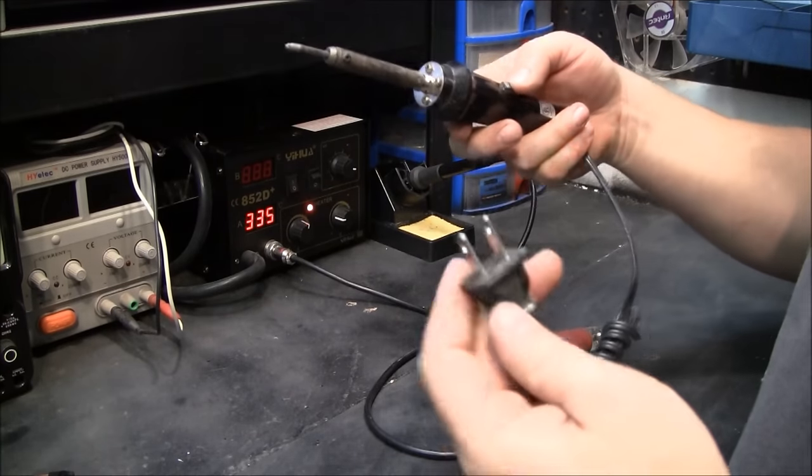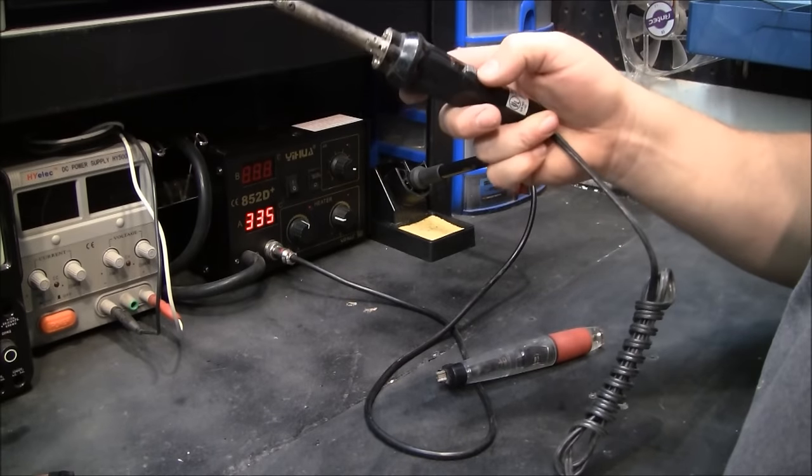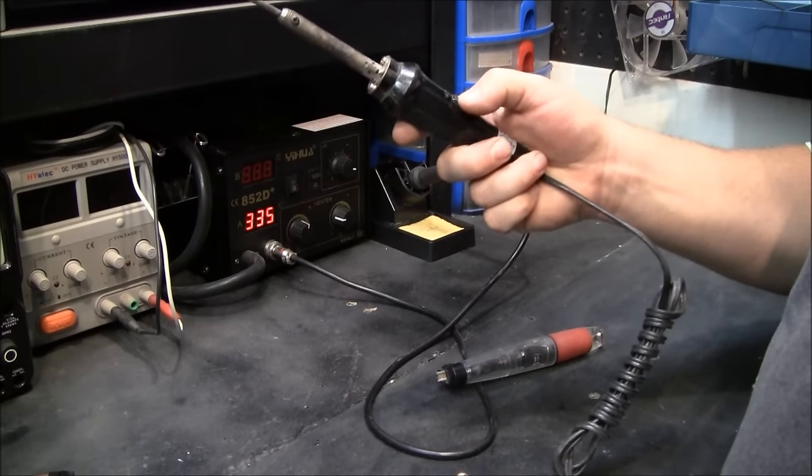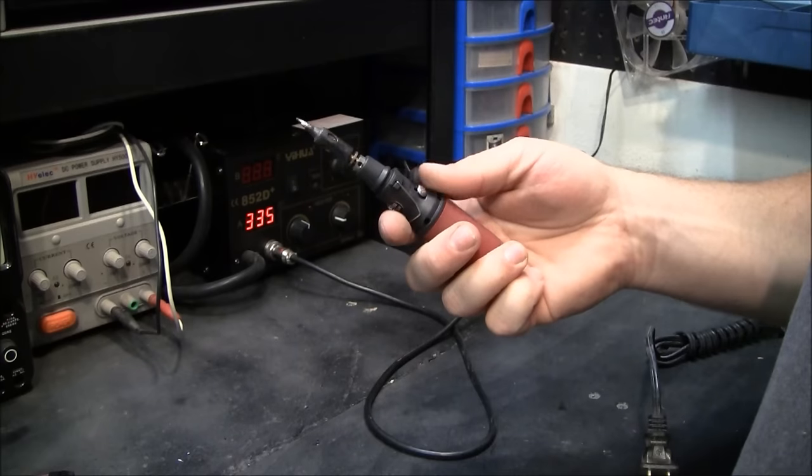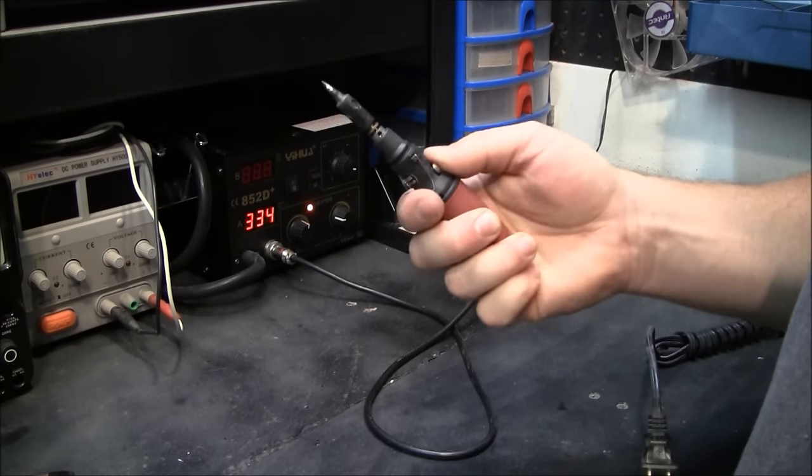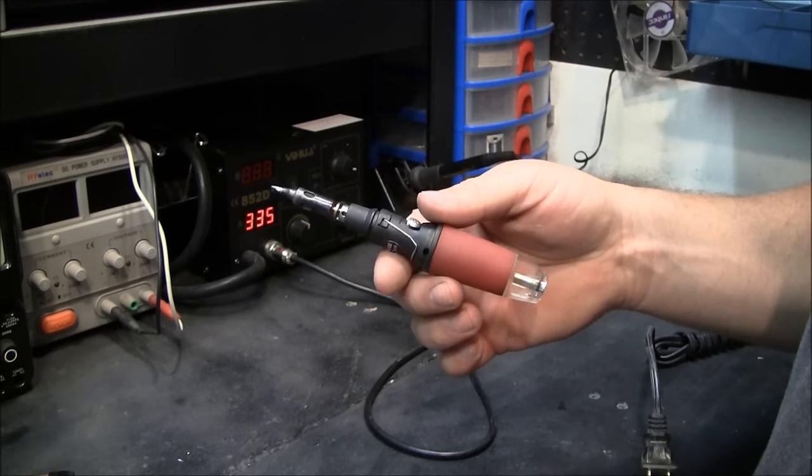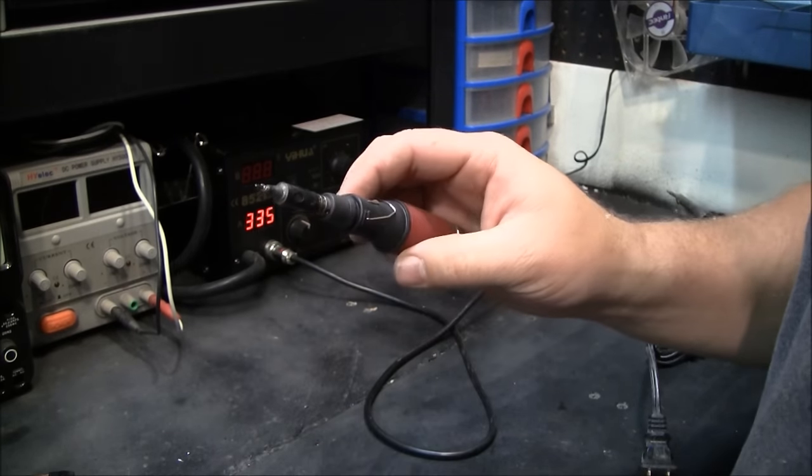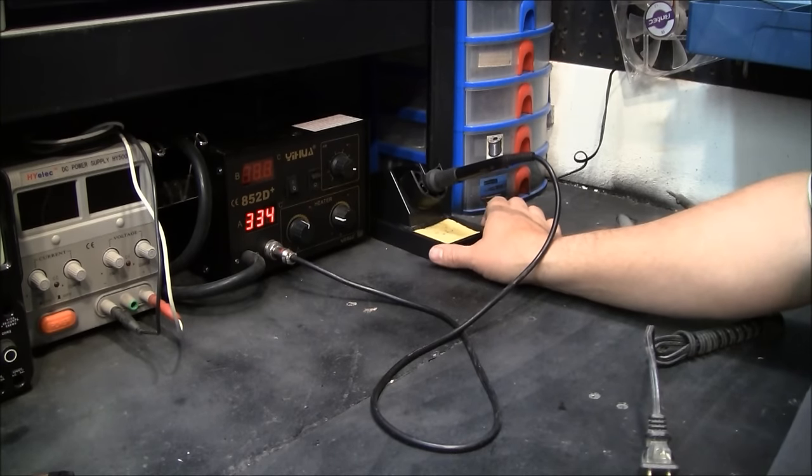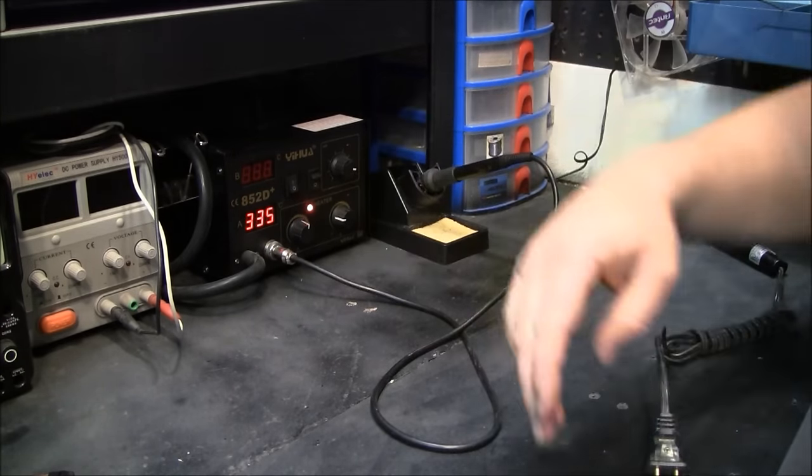Here's my first soldering iron I ever owned. This is like a Radio Shack. It has a 15 or 30 watt switch. This is a butane soldering iron. These are very handy if you have to work on stuff away from electricity. This is my soldering station I finally bought.